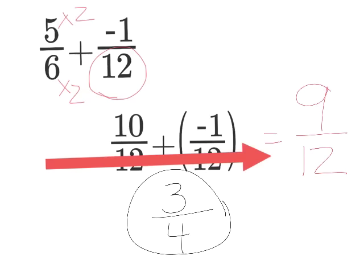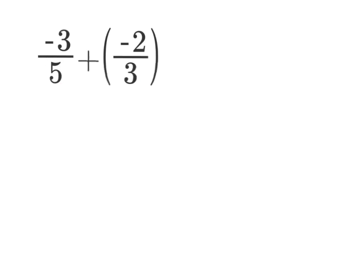Let's try one more example. This problem here, negative 3 fifths plus negative 2 thirds. This is an example of same signs. But I also need to notice that they do not have the same denominator. So I'm going to need to create common denominators.